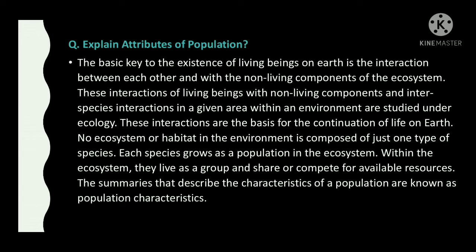No ecosystem or habitat in the environment is composed of just one type of species. Each species grows as a population in the ecosystem. Within the ecosystem, they live as a group or share or compete for available resources. The summaries that describe the characteristics of a population are known as population characteristics.